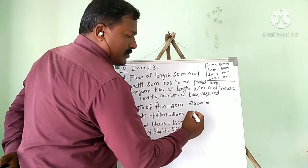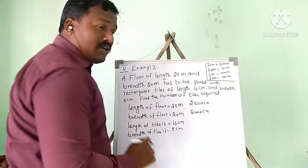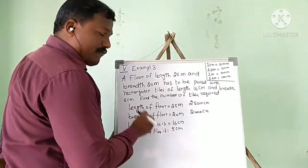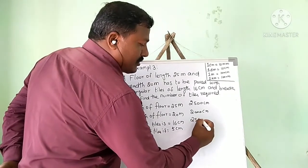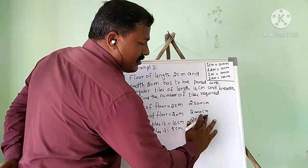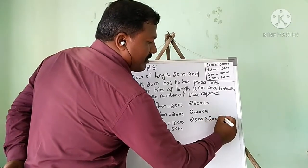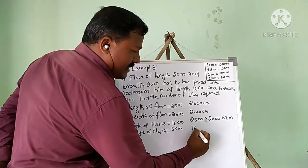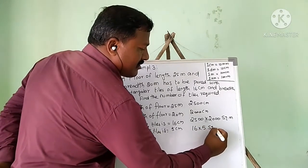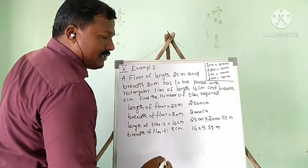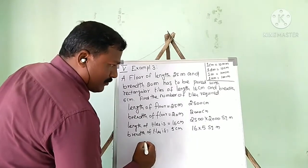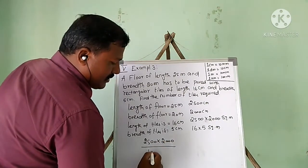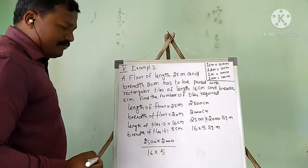And 20 meters equals 2000 centimeters. Now all units are the same. The area of the floor is 2500 centimeters multiplied by 2000 centimeters. The area of one tile is 16 centimeters multiplied by 5 centimeters. To find the number of tiles, we divide the area of the floor by the area of one tile.